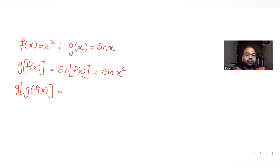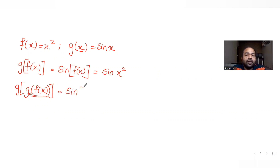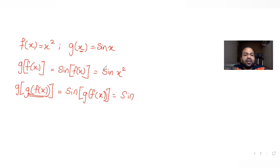Now to find g(g(f(x))), instead of x in g we write g(f(x)), so we get sin(g(f(x))). Since g(f(x)) = sin(x²), this becomes sin(sin(x²)).